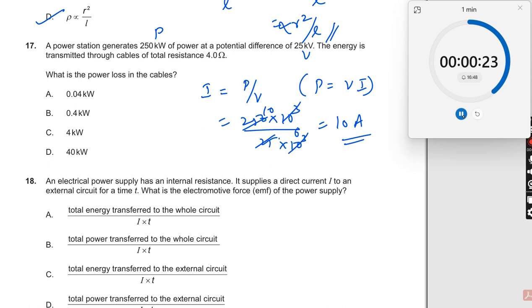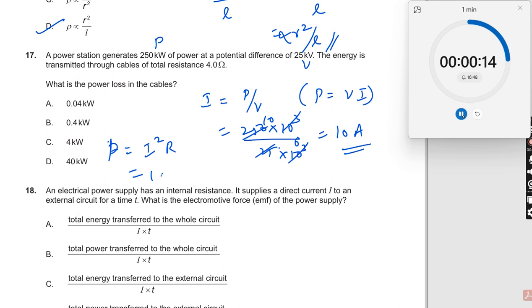If this is passing through, what is the power loss? Power loss in the cable should be equal to I² into R, which should be equal to 100 multiplied by 4, which should be equal to 400 watts.